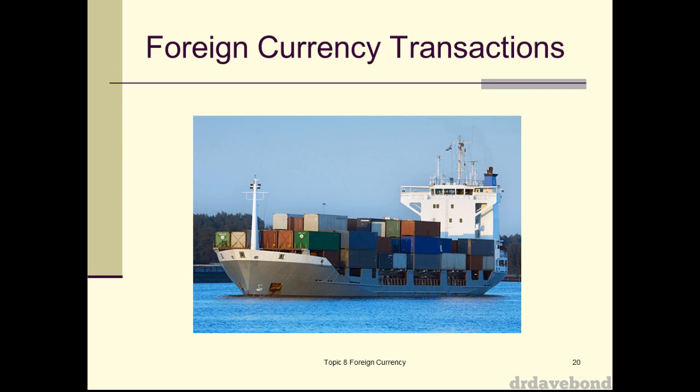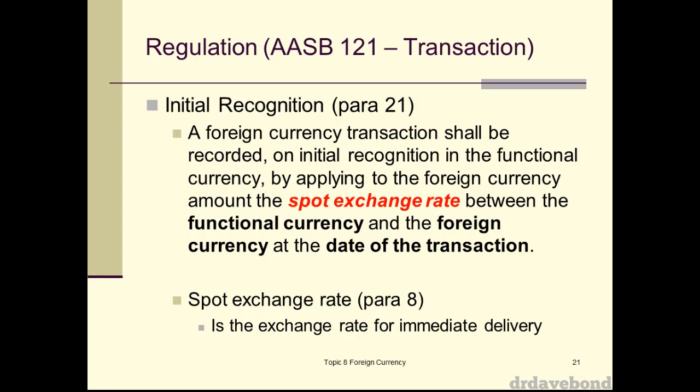On initial recognition, a foreign currency transaction shall be recorded in the functional currency by applying the spot exchange rate between the functional currency and the foreign currency at the date of the transaction. So whenever you've actually transacted — bought something, borrowed money, whatever — you look at whatever the exchange rate was at that time, and that is the rate you use.